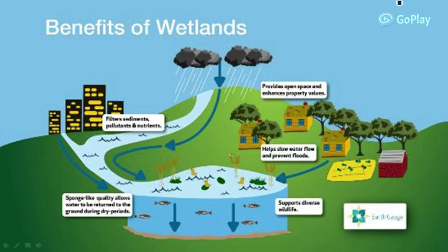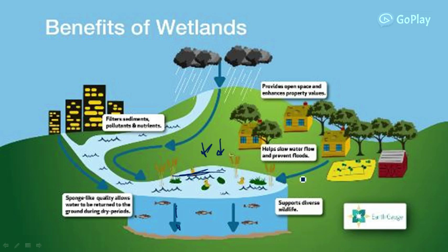This diagrammatic representation illustrates the benefits of wetlands. The wetland acts as a filtering agent for sediments, pollutants, and nutrients — it filters the incoming water and gives clean water to the water bodies, thereby improving drinking water quality. All the other ecological functions described are also performed by wetlands.